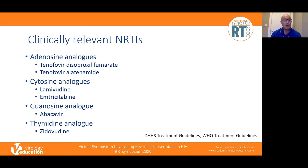Currently, the clinically relevant NRTIs are the adenosine analogs tenofovir TDF and tenofovir alafenamide; the cytosine analogs lamivudine and emtricitabine; the guanosine analog abacavir; and the thymidine analog zidovudine. These drugs are included in current treatment guidelines including U.S. and WHO guidelines, though some may be alternate rather than first-line options. It's very important to remember that NRTIs are pro-drugs, which means they need to be di- or triphosphorylated by cellular kinases in order to become active drugs.